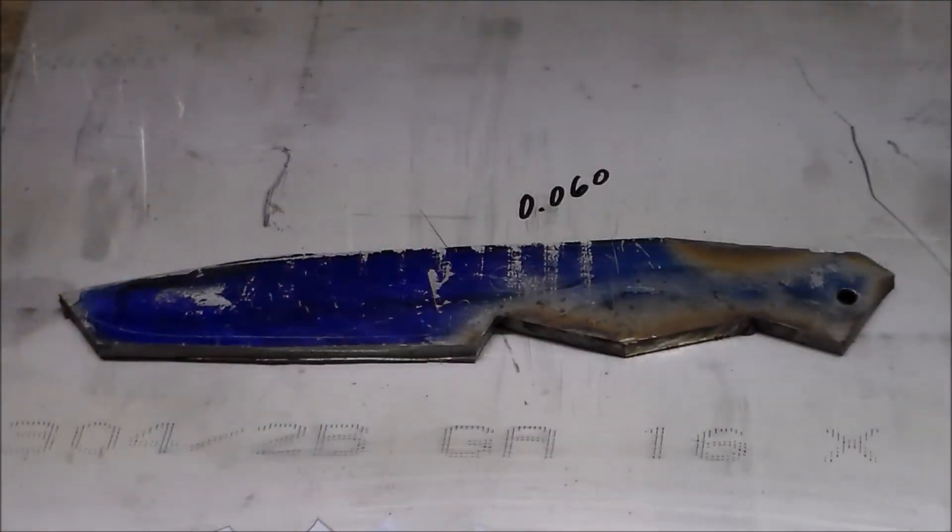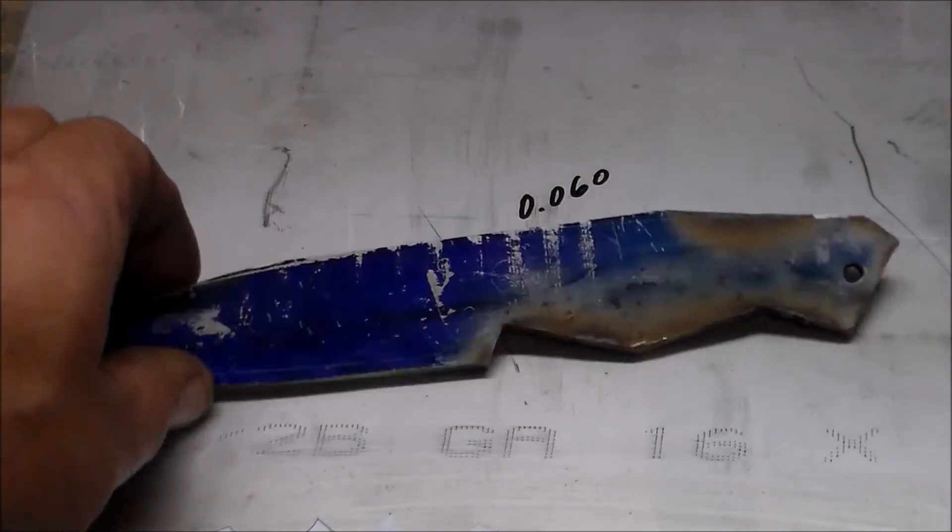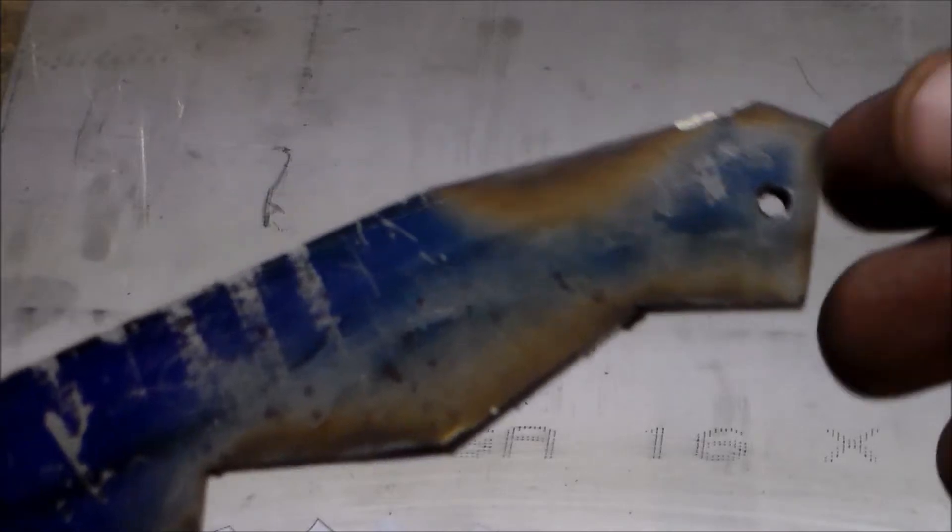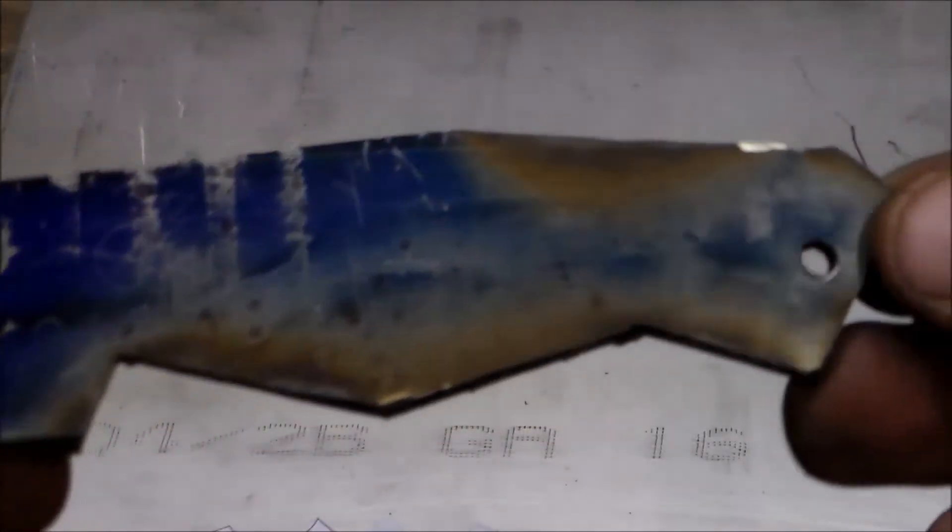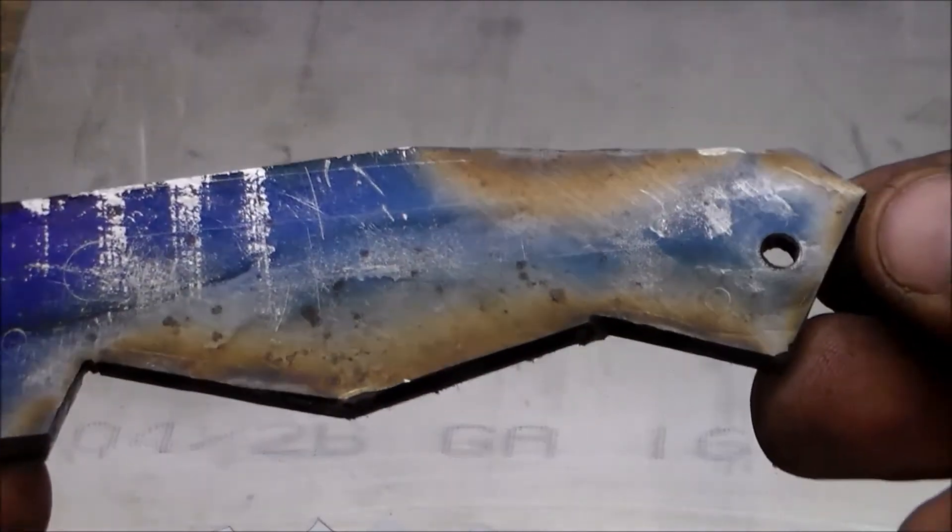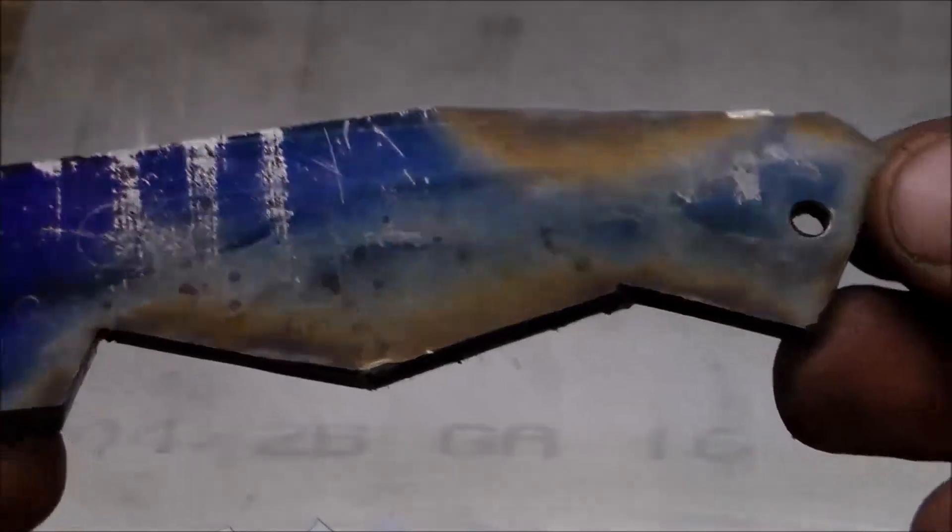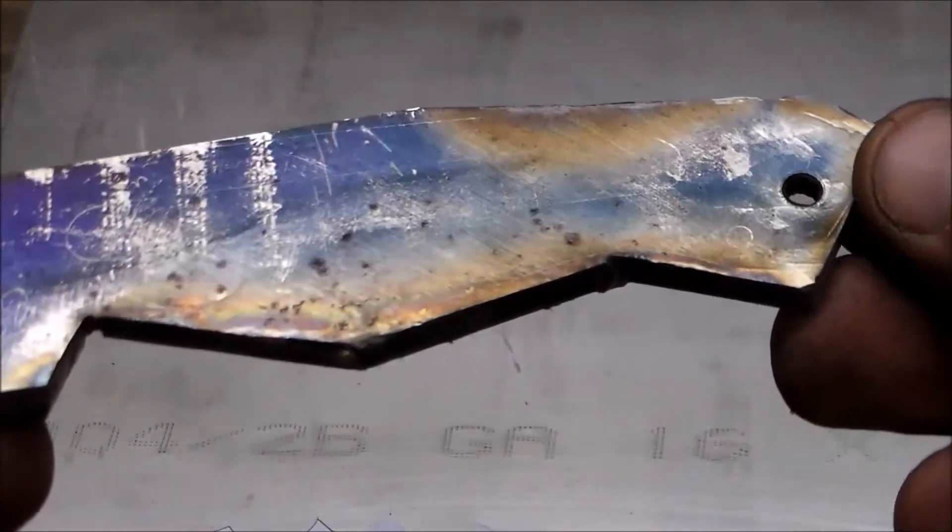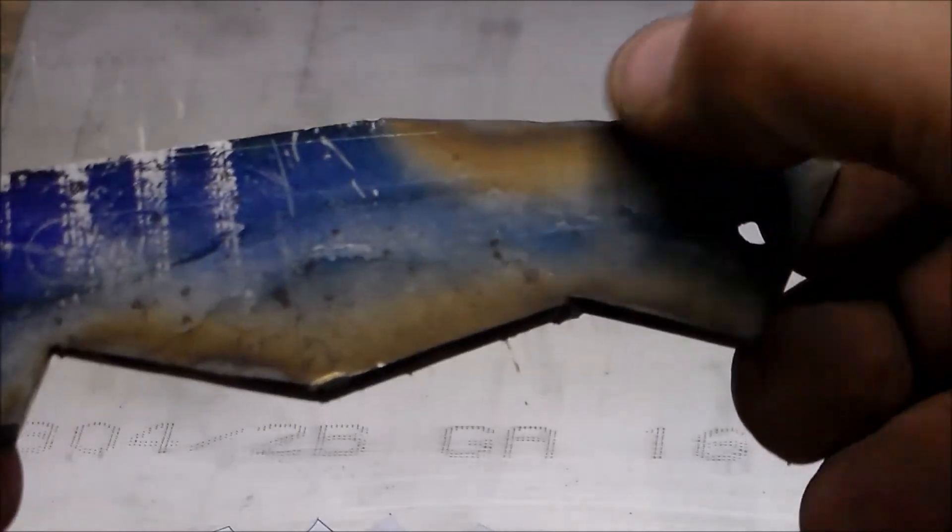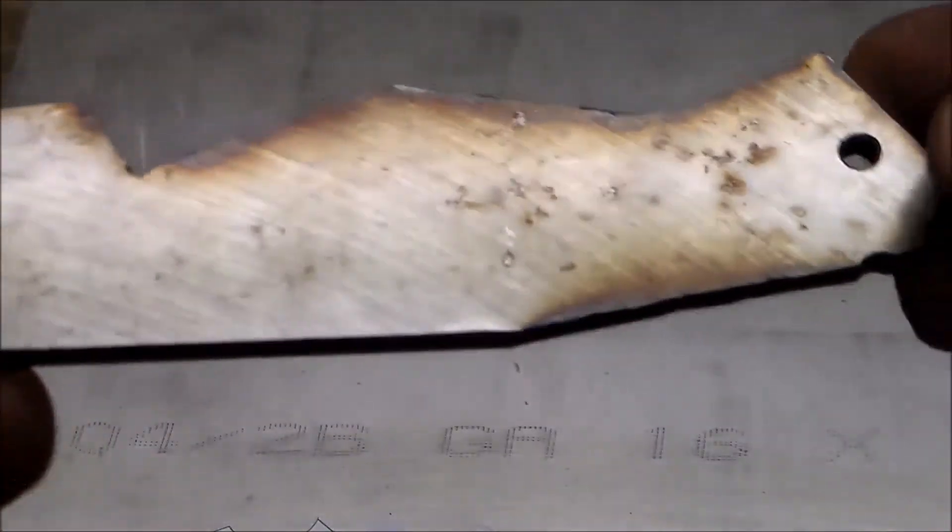I've kind of just hacked out the shape with a cutoff wheel. And, I was going to show you, you can see in the handle, what would be the handle area. I didn't particularly take my time. I just cut it out without worrying about it. And, you can see the color change there around the edge.